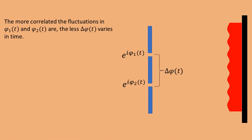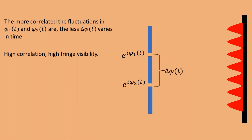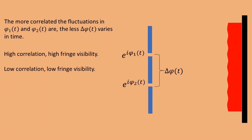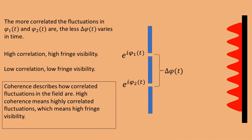For example, if the fluctuations in phi1 and phi2 are perfectly correlated, then delta-phi is constant in time, and a clear interference pattern will form. But if the fluctuations in phi1 and phi2 are completely uncorrelated, then delta-phi varies a lot in time, and no interference fringes can be observed. This is basically the difference between coherent and incoherent light. Light with high coherence means that the fluctuations are highly correlated, which means we can get a high fringe visibility.